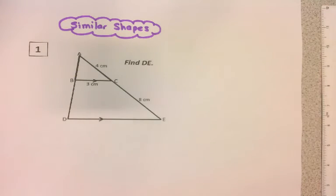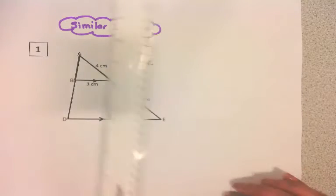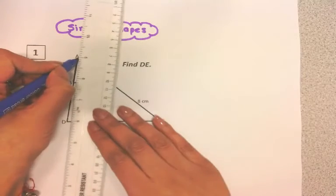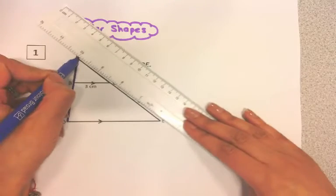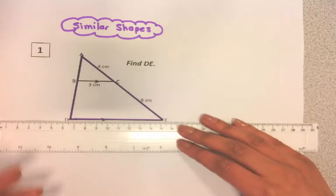We've got a more complicated diagram here, and what we need to do is extract the similar shapes. I really recommend that you draw the similar shapes out. The first one I'm going to draw is the larger triangle here. I'm just going to do a quick sketch—it doesn't have to be too accurate.